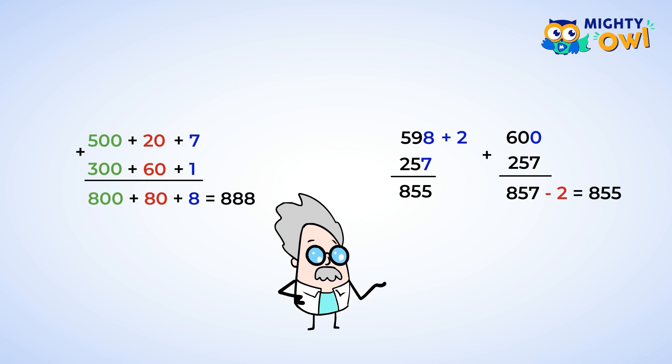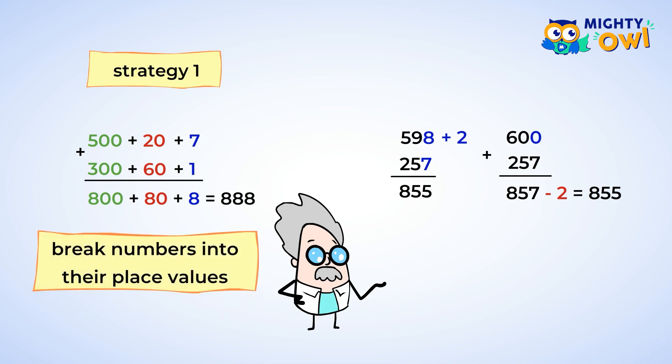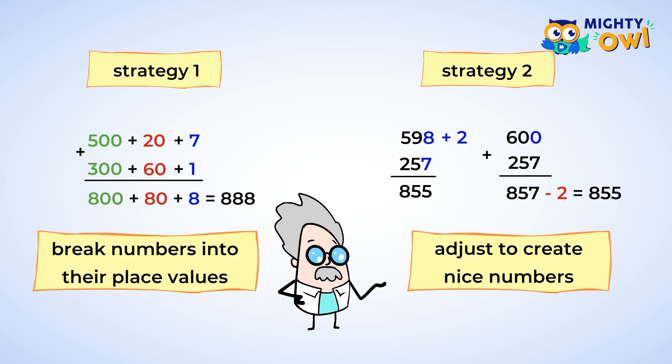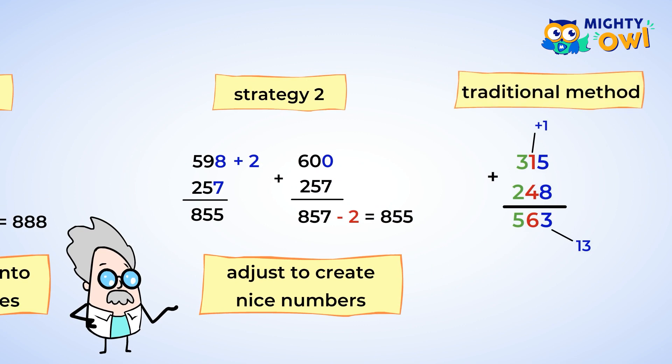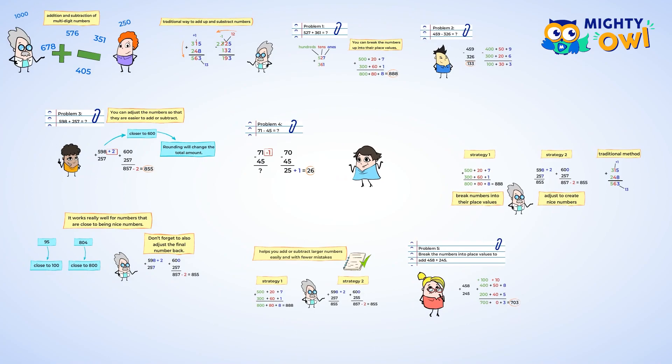Let's review the new strategies that you've been practicing. One way to help make adding or subtracting large numbers easier is to break them into their place values and then add or subtract those. Another way is to adjust the numbers to create nicer numbers that make it easier to add or subtract. Remember though, you'll also need to adjust your final answer so that everything is balanced. You also always have the traditional way of subtracting the numbers vertically by lining up the place values too. So many ways to add and subtract numbers. Great work today, and see you next time!